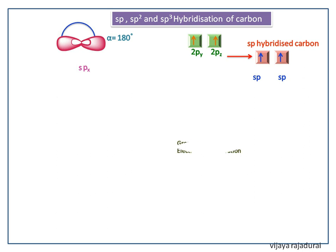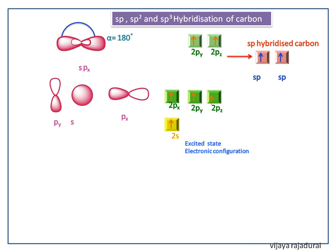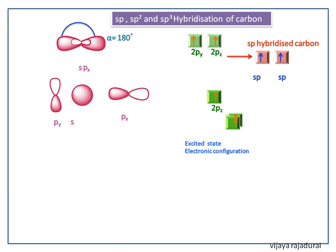Next we see SP2 hybridization of carbon atom. In the excited state one of the two S electrons goes to 2Pz orbital. Now one 2S orbital, one 2Px orbital and one 2Py orbital hybridize together gives SP2 hybridized orbitals.